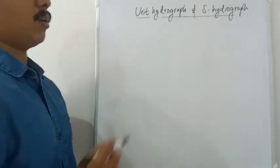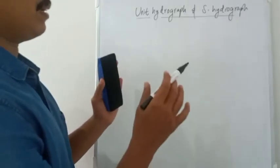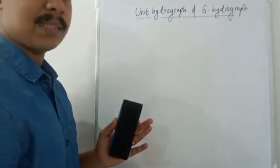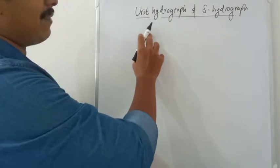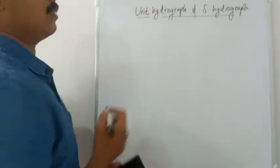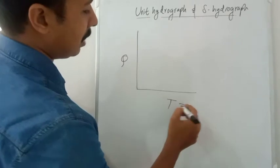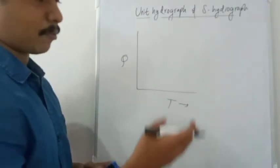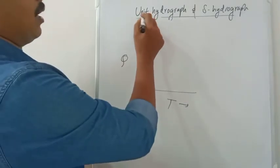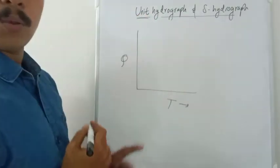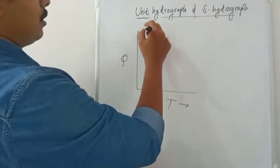Welcome back. Today we are starting with the most important topic of this module: unit hydrograph and S hydrograph. Unit hydrograph is a parametric model that we use for all calculations in relation with runoff. A hydrograph is a discharge versus time graph. A unit hydrograph is produced by one centimeter of effective rainfall.